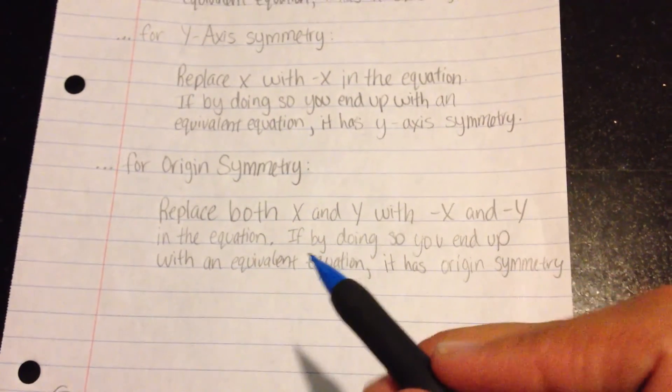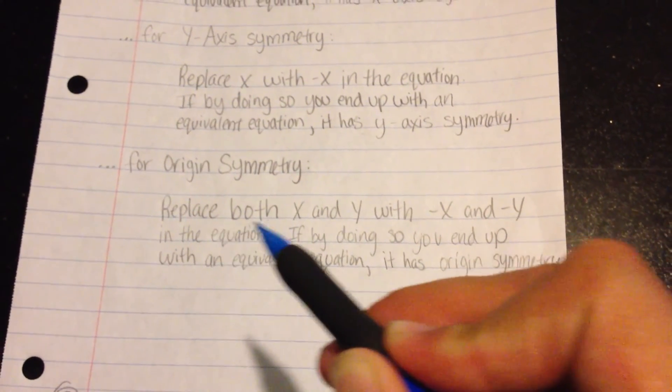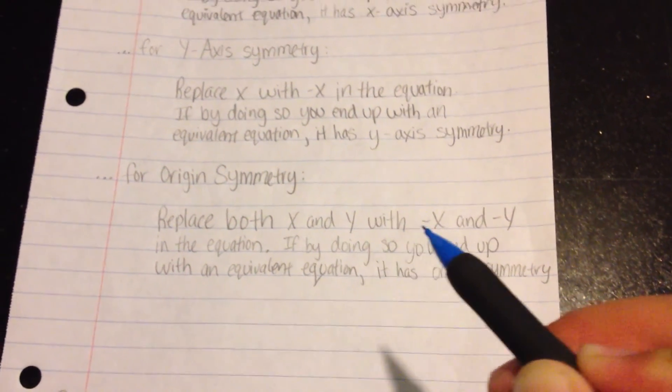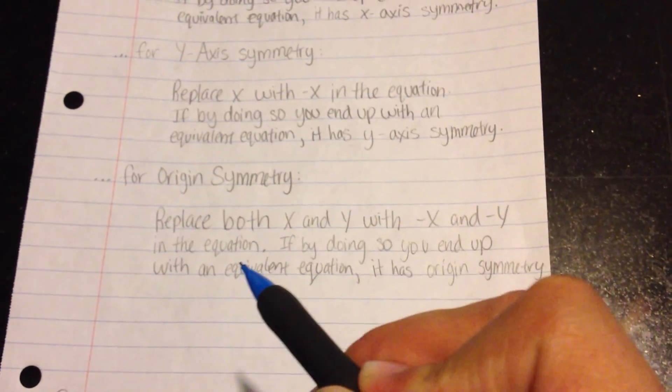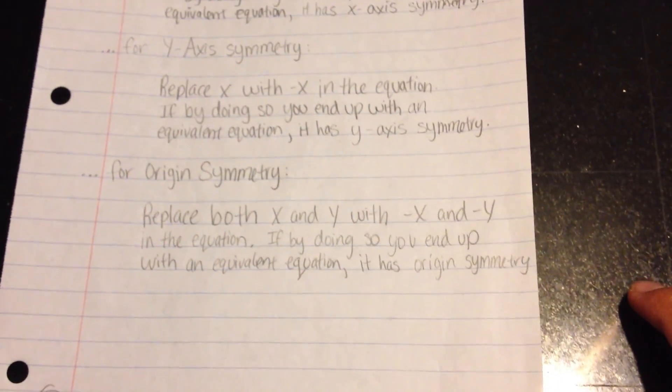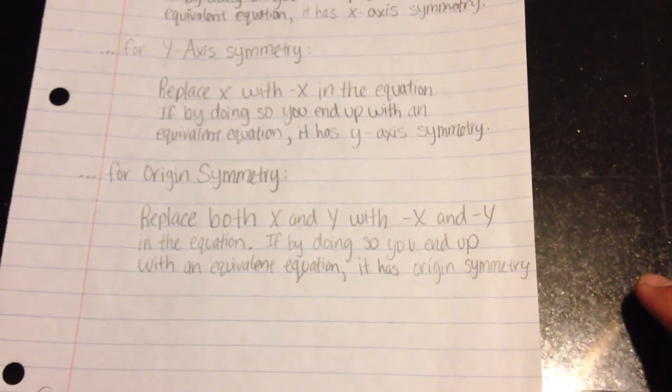For origin symmetry, you've got to be careful, because what you need to do is replace both the x and the y with negative x and negative y in the equation. And if, when you do that, you end up with an equivalent equation to the one you started up with, it has origin symmetry.